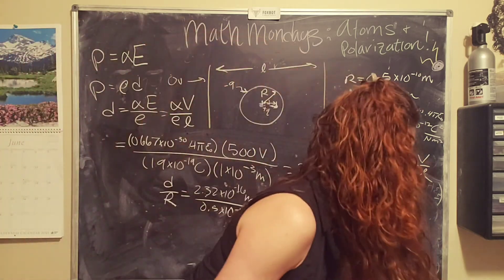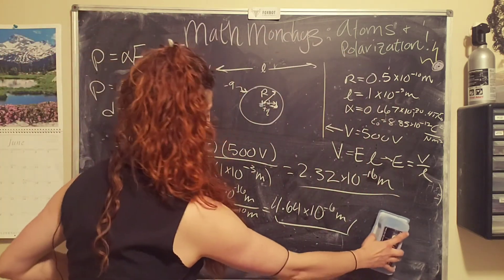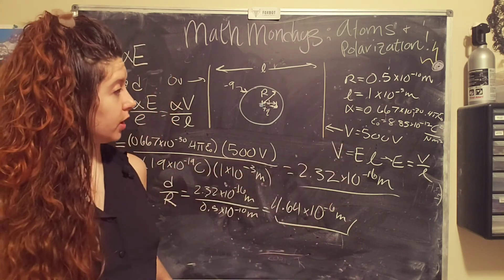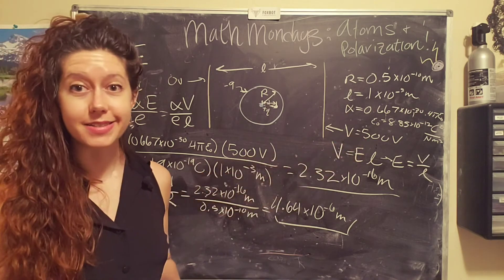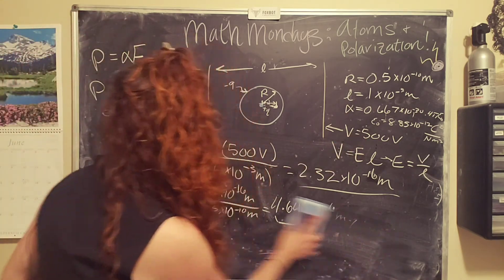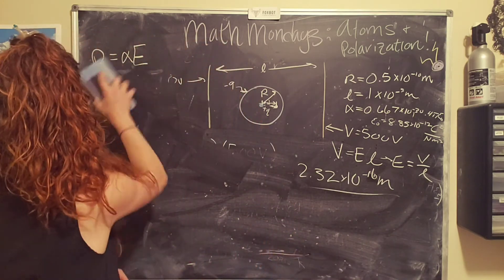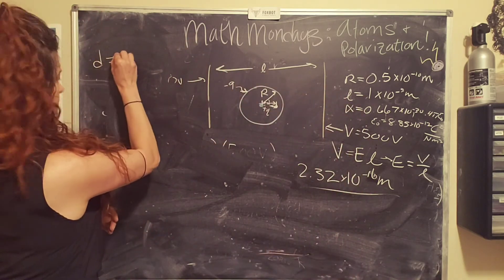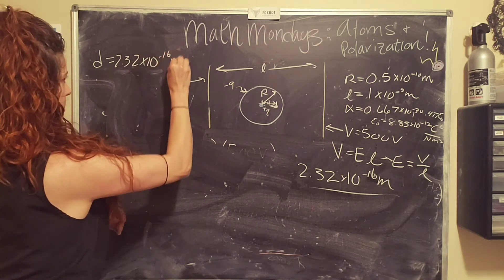Let's keep going. We're at 11 minutes. If you're in, you're in. We're gonna cruise on through. So how much energy would we need to ionize the atom? That is going to be our next goal. So we're gonna save this, erase this, and write up here d equals 2.32 times 10 to the negative 16th meters.